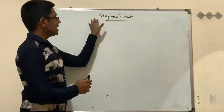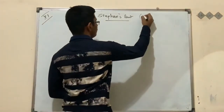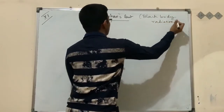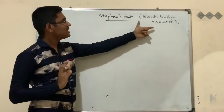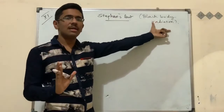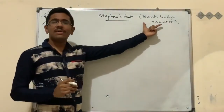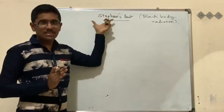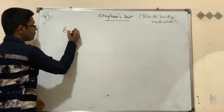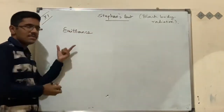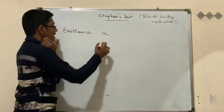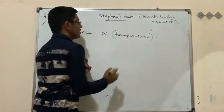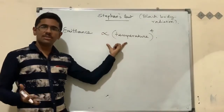Any object or physical body which can absorb and emit radiation of any frequency is termed a black body; the example is a cavity maintained at constant temperature. According to Stefan's law, emittance is directly proportional to temperature raised to the power of four (T⁴). This is known as Stefan's law.